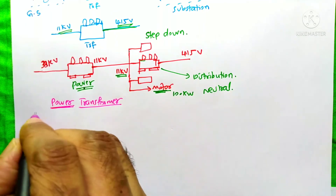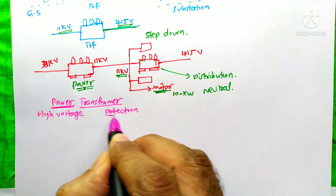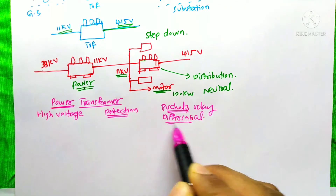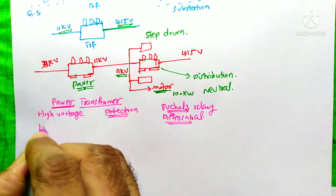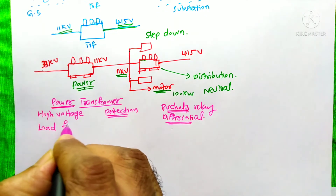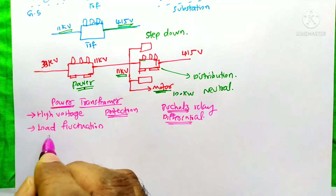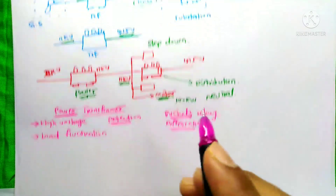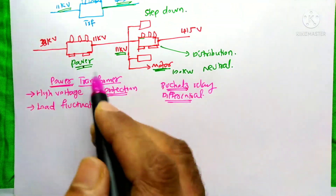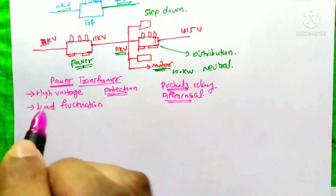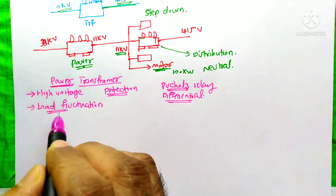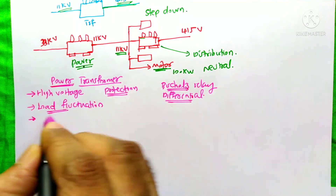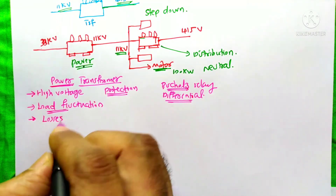The power transformer handles high voltage, so a high level of protection is needed — we are already familiar with the Buchholz relay and differential protection. The load fluctuation is very low in the case of the power transformer, because loads do not connect directly to it. Only in specific industrial cases, such as direct motor connection, would there be some load fluctuations; generally, load fluctuations are negligible. Due to these low load fluctuations, the losses in the power transformer are also very low.